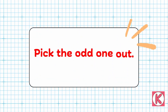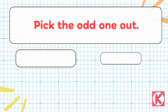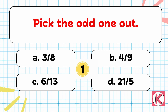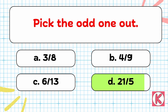Next question. Pick the odd one out. The right answer is Option D — 21 by 5.